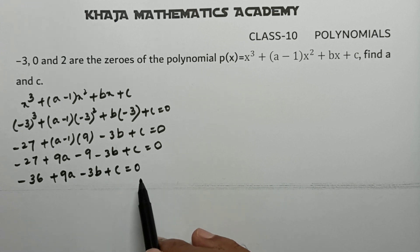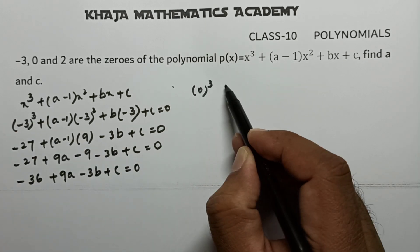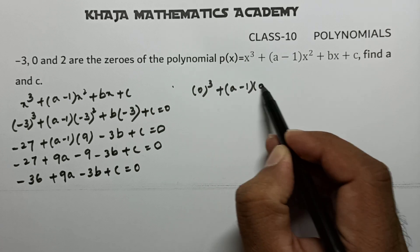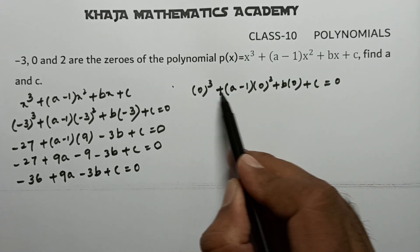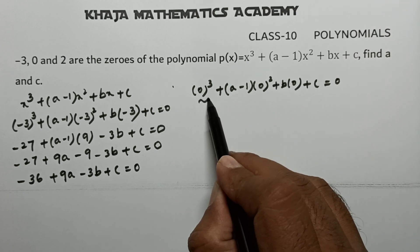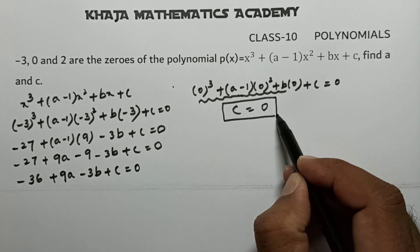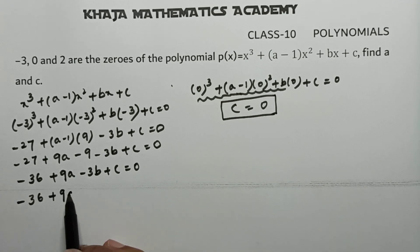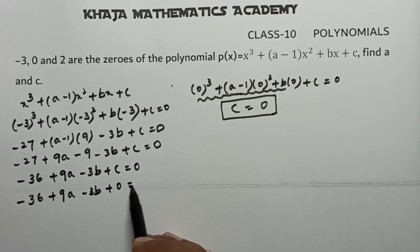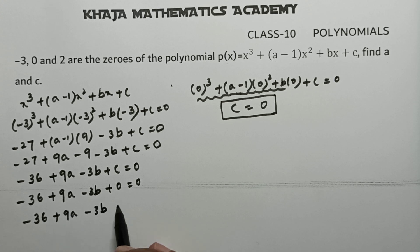Now substitute x = 0: 0³ + (a-1)(0²) + b(0) + c = 0. Everything becomes 0 except c, so c = 0. Substituting c = 0 back into equation 1: -36 + 9a - 3b = 0.